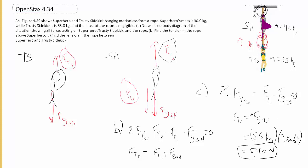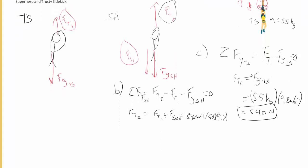We actually know what FT1 is. We already solved it. That's 540 newtons. We know the force of gravity is just the superhero's weight. So we can just add those two up. So we have 540 newtons plus, and then the superhero weighs 90 kilograms. We just take 90 times 9.8.